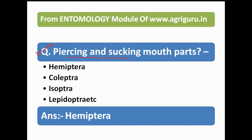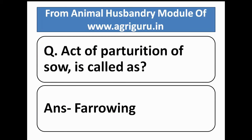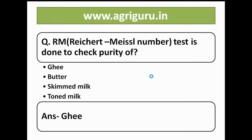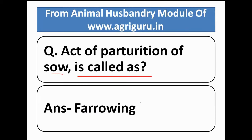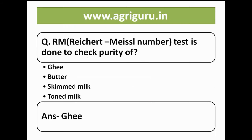The next question from the entomology module: pressing and sucking mouth part answer will be Hemiptera. Posterization of saw is known as furrowing. This is from the animal husbandry module of agriguru.in.